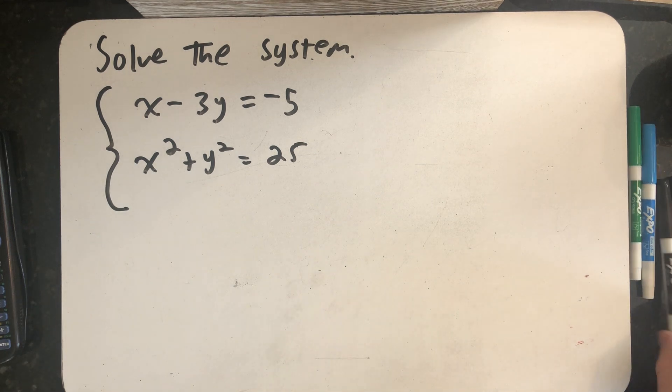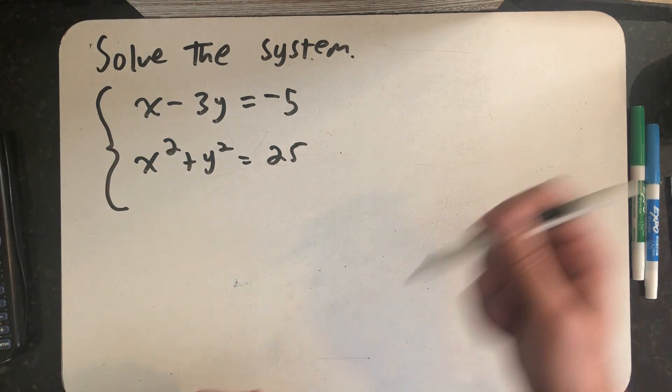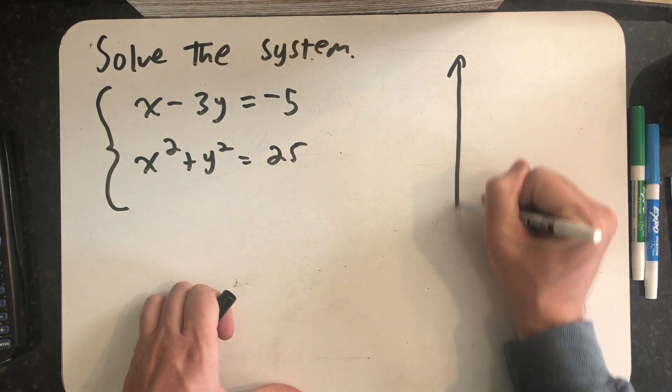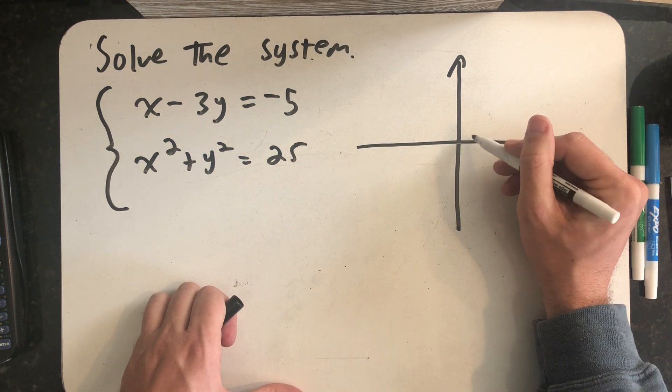It's the equation of a line. And in fact, let's get started by graphing the two equations because this bottom equation is the equation of a circle with radius 5 centered at the origin.